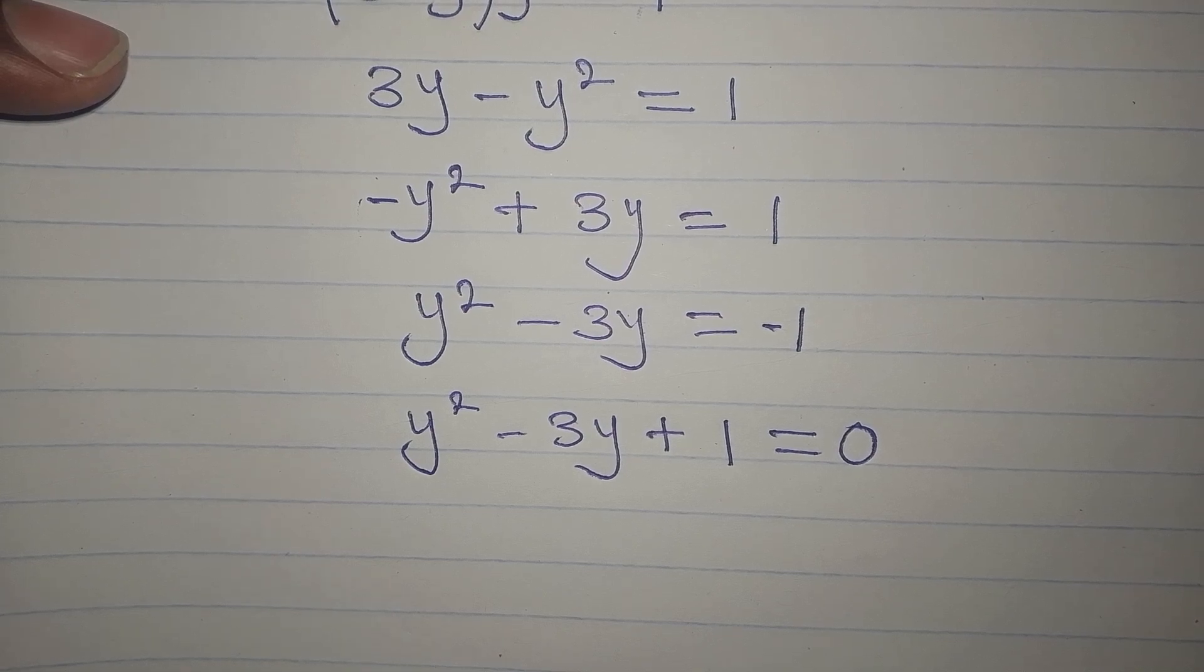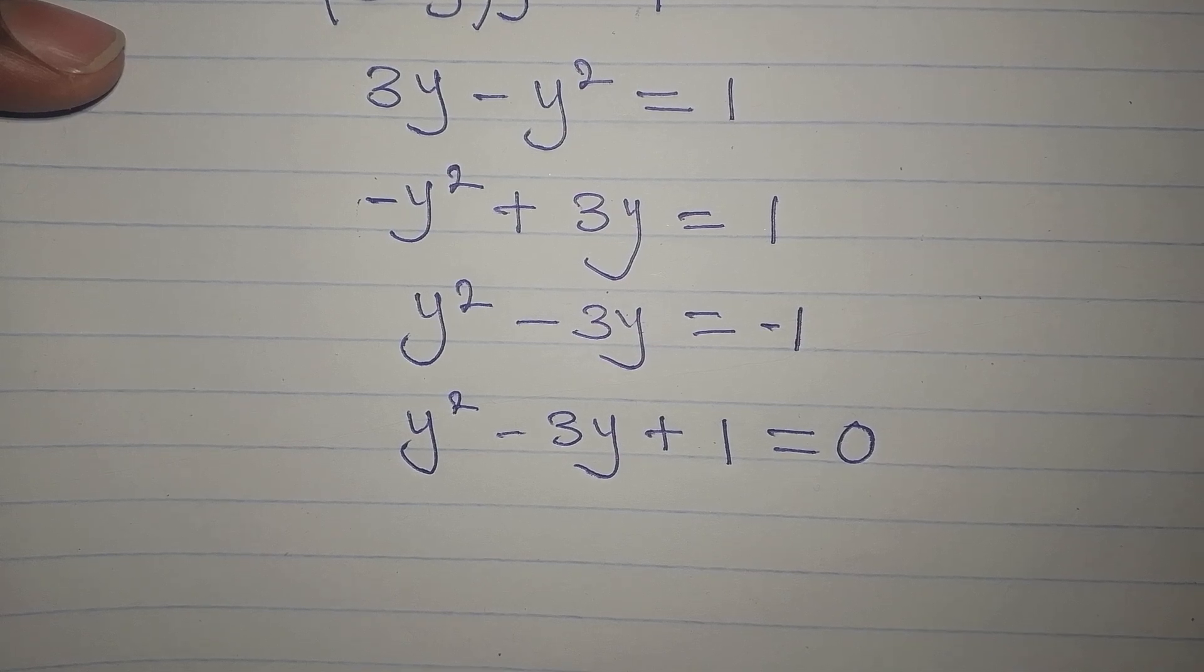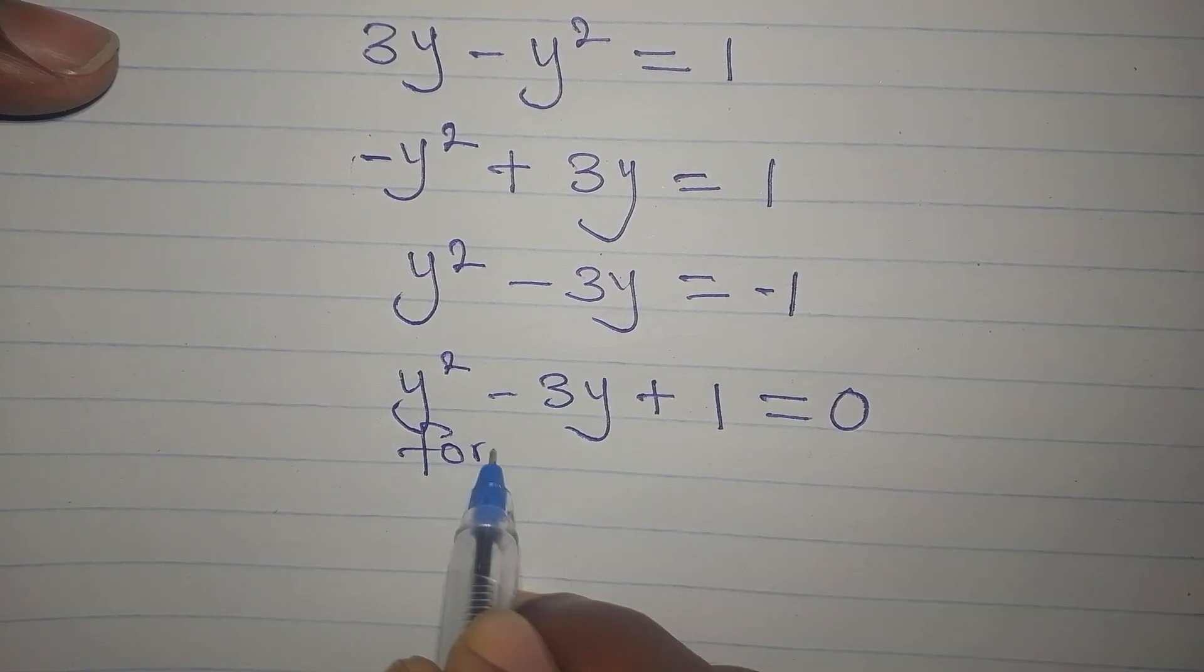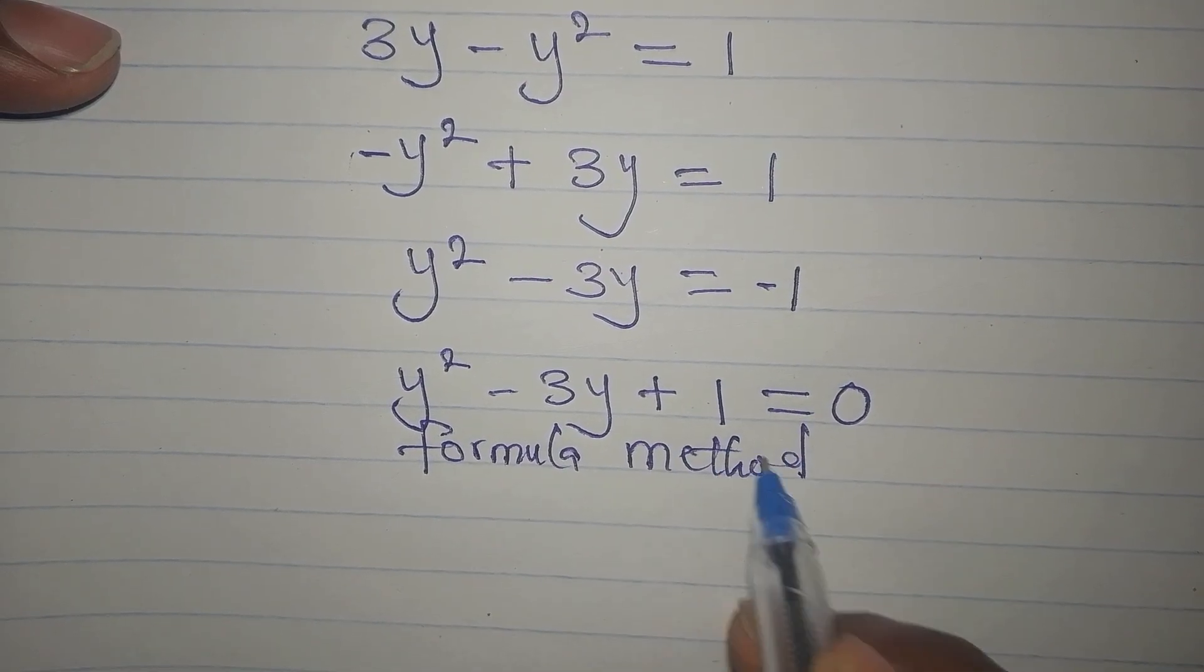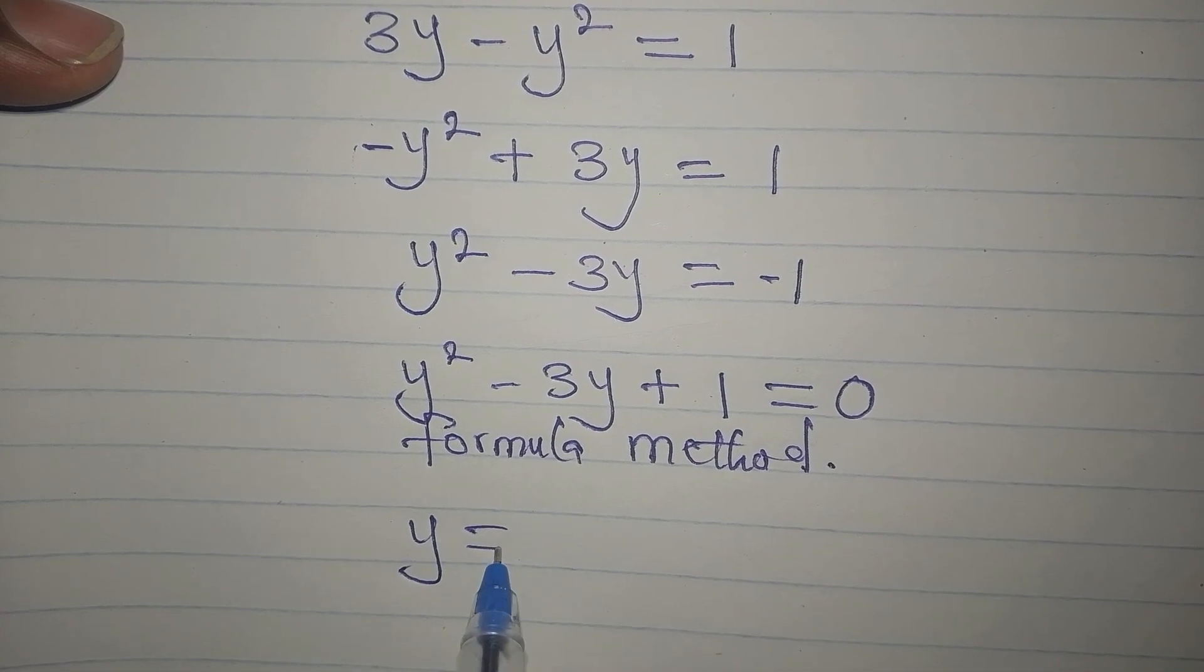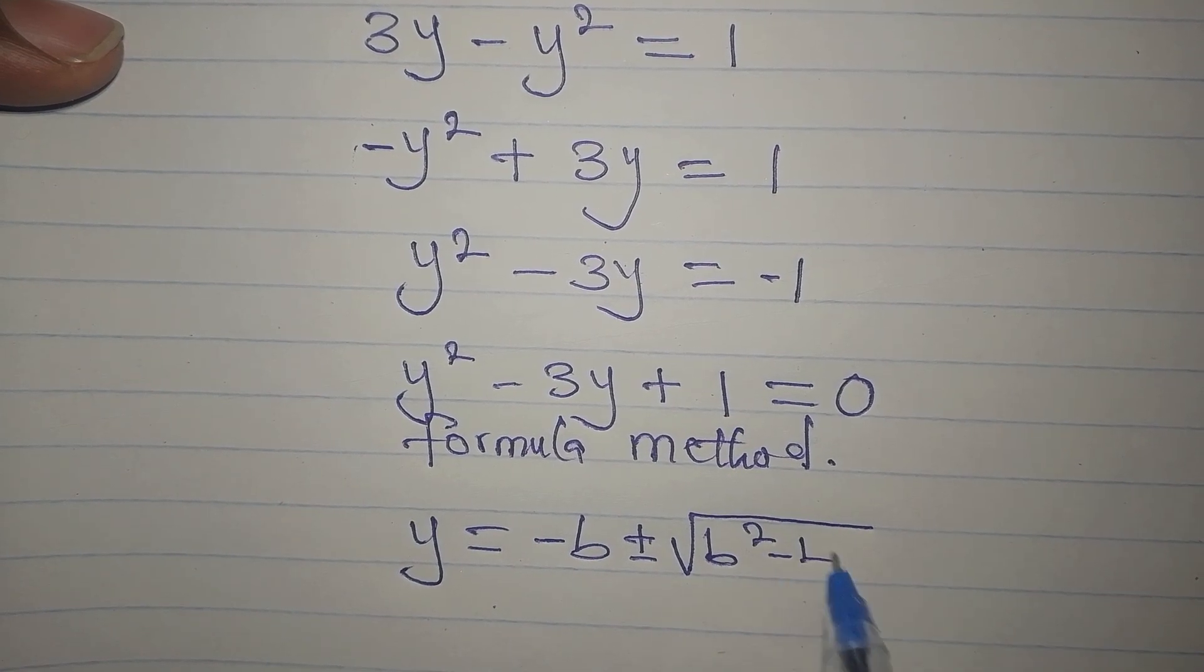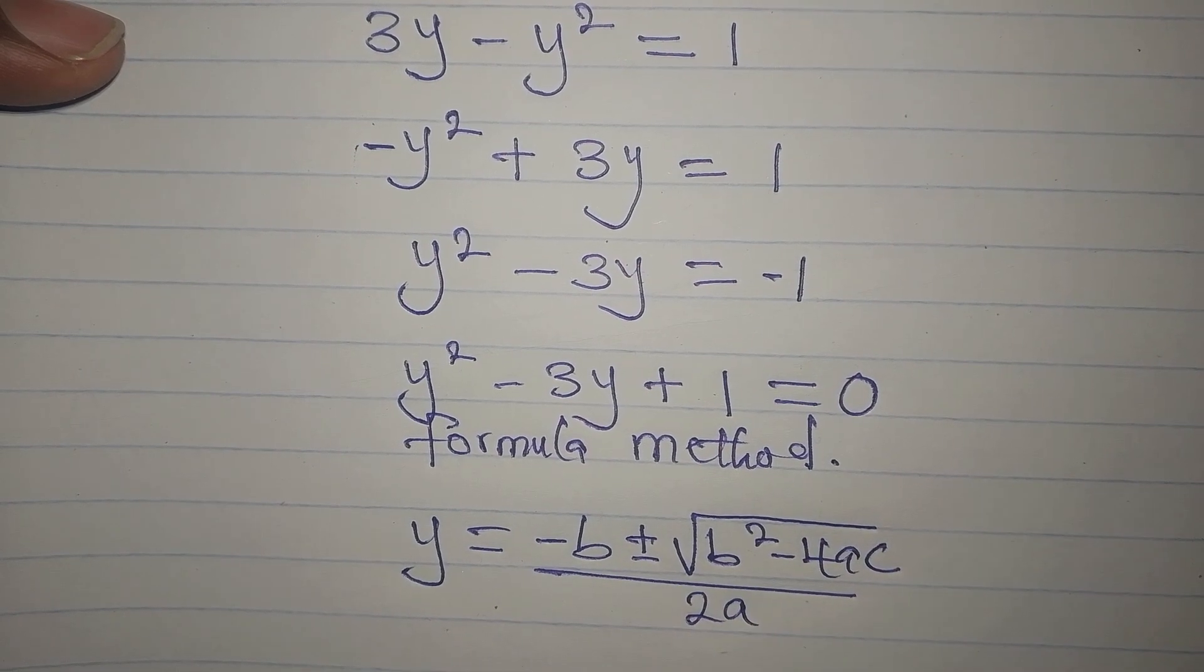Now, from here we have a quadratic equation and it's left for us to decide the method to use. And if you have been following me, you will see that I always use the formula method. And the formula is y equals minus b plus or minus the square root of b squared minus 4ac divided by 2 times a.